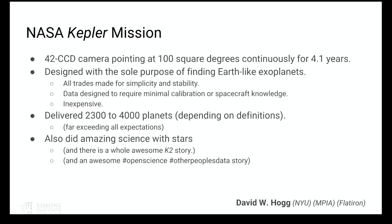The mission responsible for finding thousands of planets by the transit method is basically the Kepler mission, along with some found by Corot and later versions. The Kepler mission is a 42-CCD camera that just stared at one patch of the sky for four years — that's all it did. It was designed with exactly one purpose: to find Earth-like exoplanets. All the design trades — detector type, number of CCDs — were made for the simplicity and stability of the instrument. No other science goals were considered in its design.